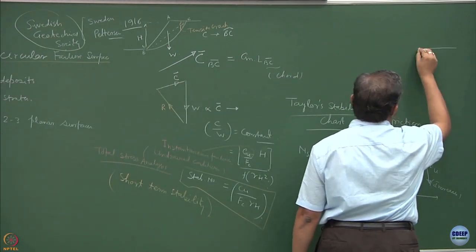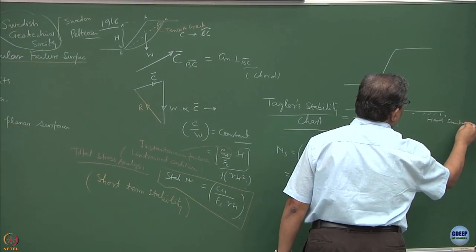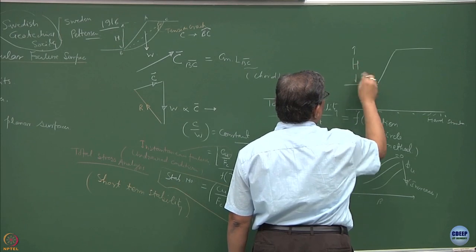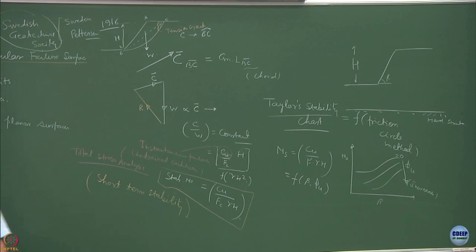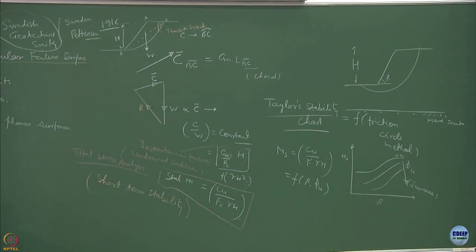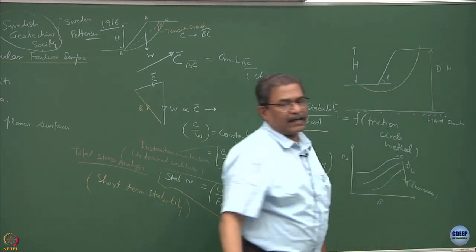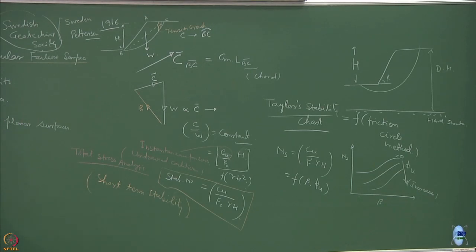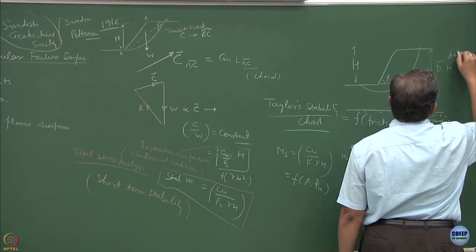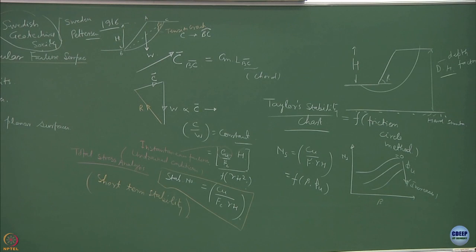Suppose this is the slope and this is the hard strata, height of the slope is h, inclination of the slope is beta. One of the failure mechanisms which is going to be most critical would be a slip surface which is circular, particularly in pure cohesive soils. If this is h, we define this as d into h, the depth factor. D is the depth factor. I will show you these graphs so that you can use them for doing the analysis.